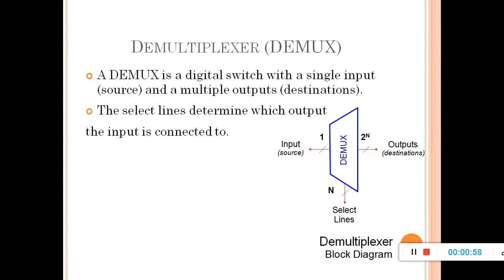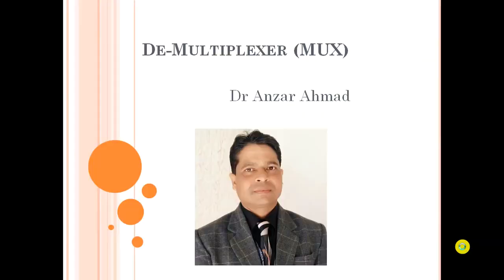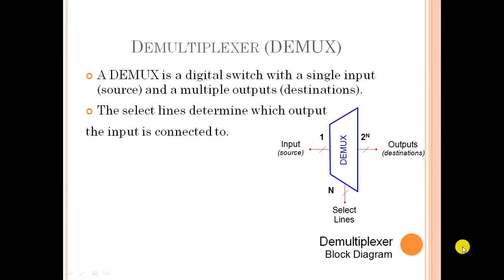Demux is a combinational circuit. It is just the opposite of the multiplexer. A multiplexer has many inputs and one output, while a demux has one input and many outputs.